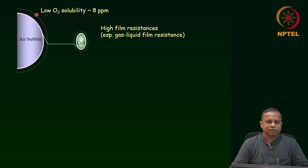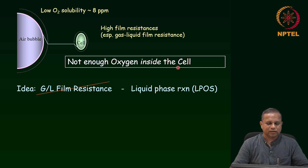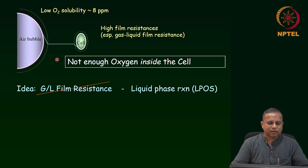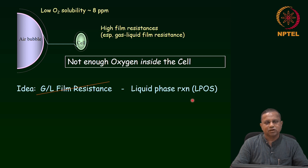The solubility of oxygen is low — about 8 ppm as a rule of thumb at typical conditions. Therefore, we are limited from a thermodynamic angle as well as a kinetic angle. As a result, there is not enough oxygen inside the cell. Our thinking was: if we can get rid of the gas-liquid film resistance, we completely obviate that difficulty. And the only way to get rid of it is by not having a gas phase at all, and instead use a liquid-phase reaction to generate oxygen — what we called the liquid phase oxygen supply strategy.